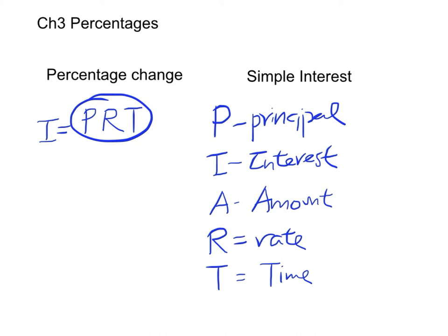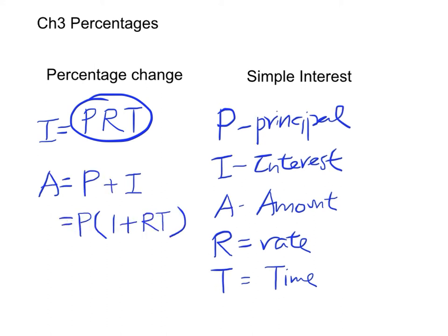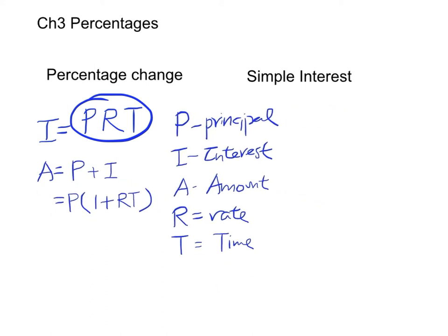We simply multiply P times R times T, and for the amount this will be equal to the principal plus the interest, or we can write this as P times 1 plus R times T.